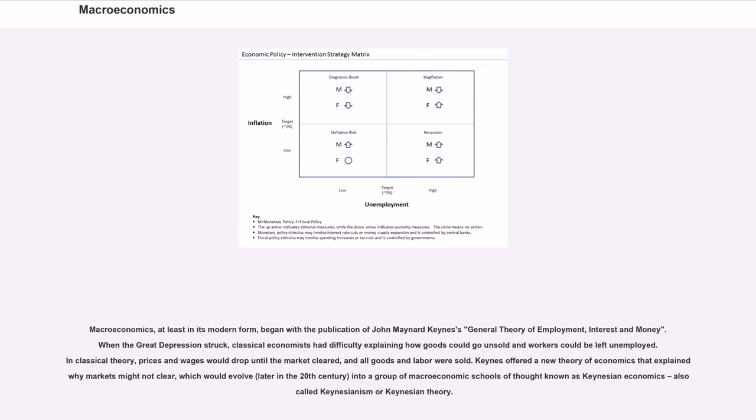Macroeconomics, at least in its modern form, began with the publication of John Maynard Keynes's General Theory of Employment, Interest and Money. When the Great Depression struck, classical economists had difficulty explaining how goods could go unsold and workers could be left unemployed. In classical theory, prices and wages would drop until the market cleared, and all goods and labor were sold.